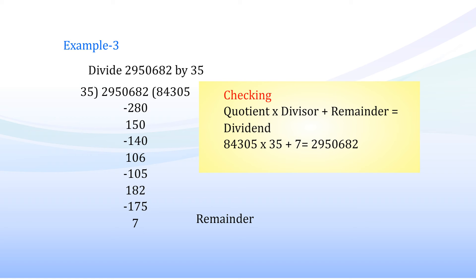Example 3: Divide 29,50,682 by 35. Solution: 29,50,682 ÷ 35 = 8,43,05 with remainder 7. Checking: 8,43,05 × 35 + 7 = 29,50,682.